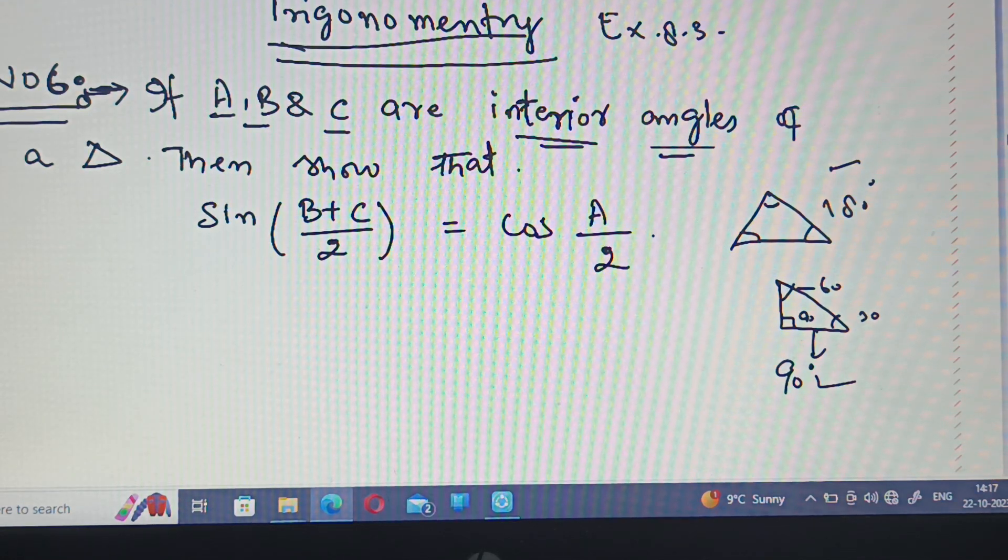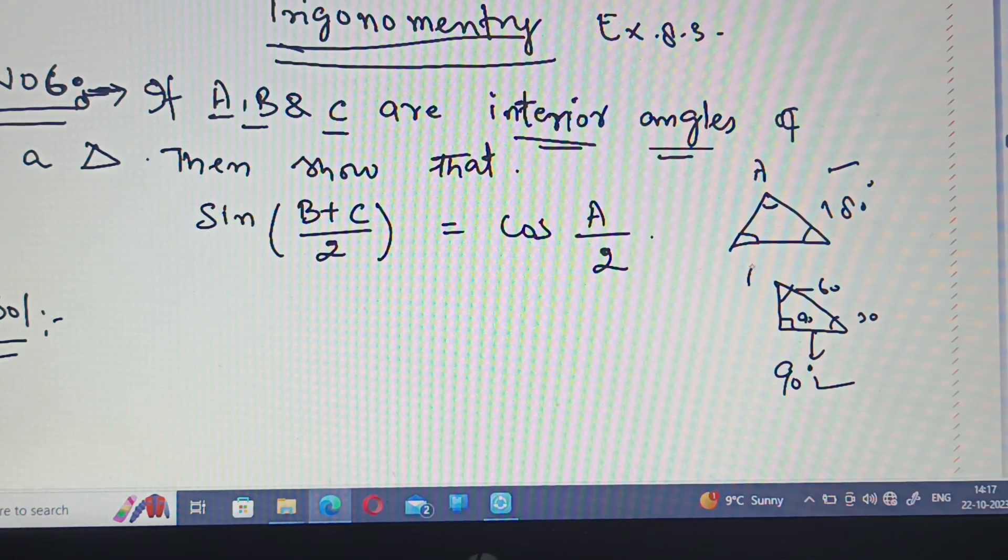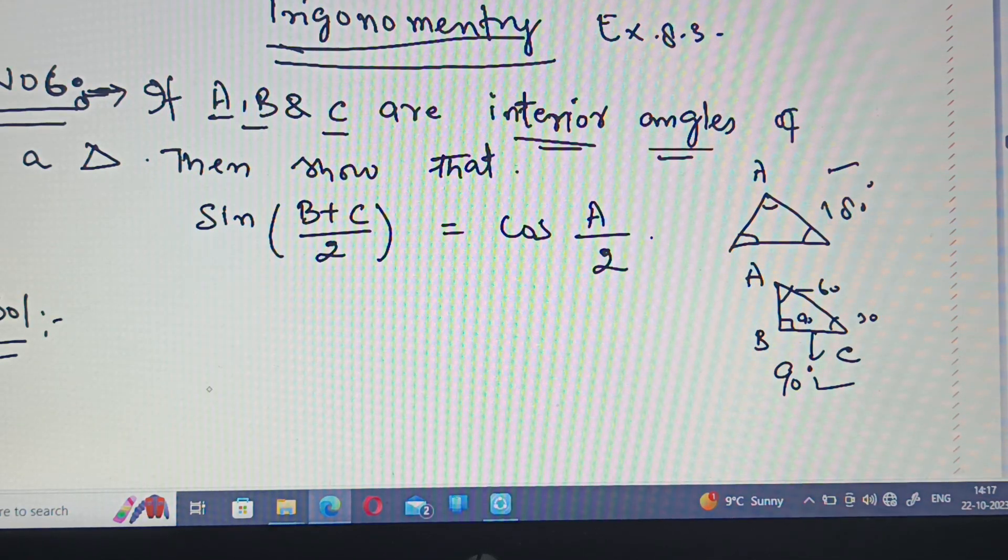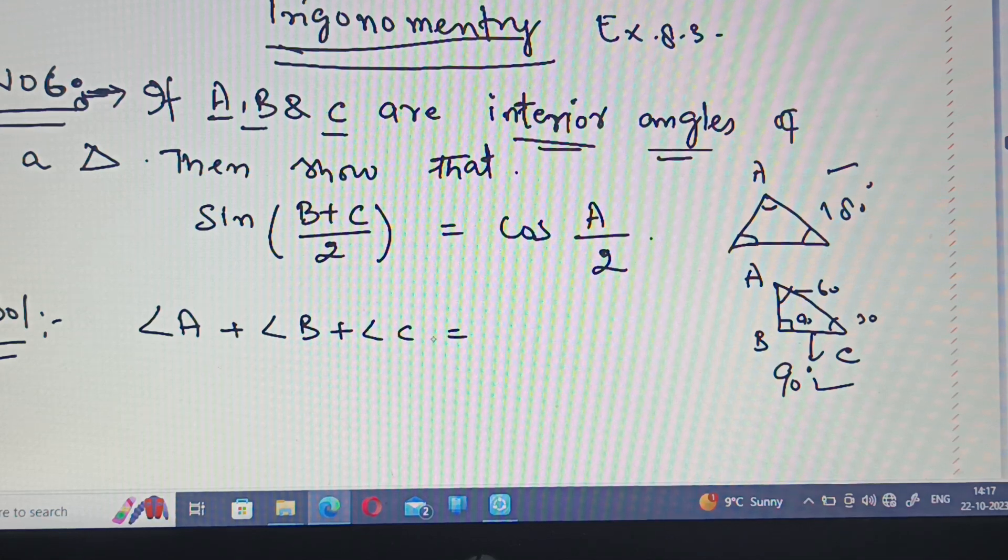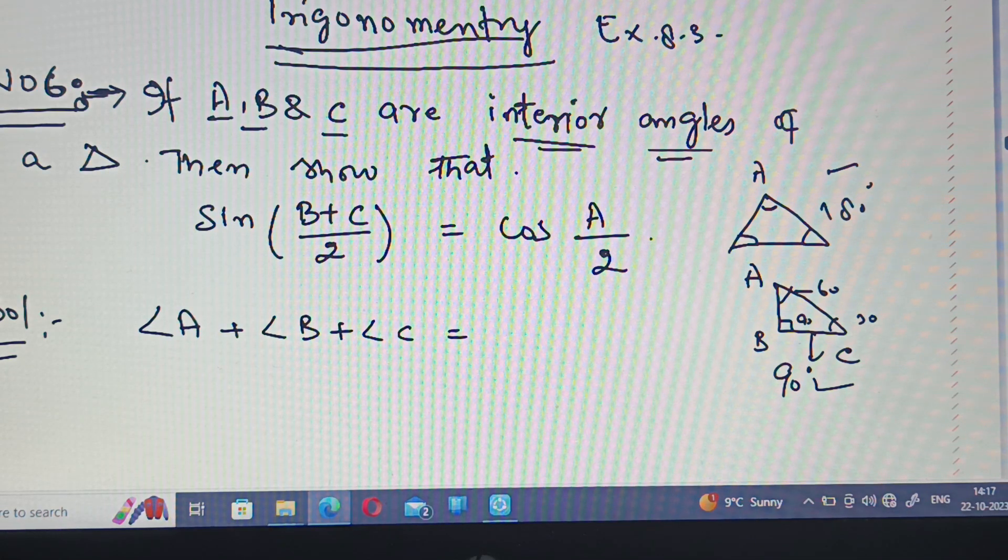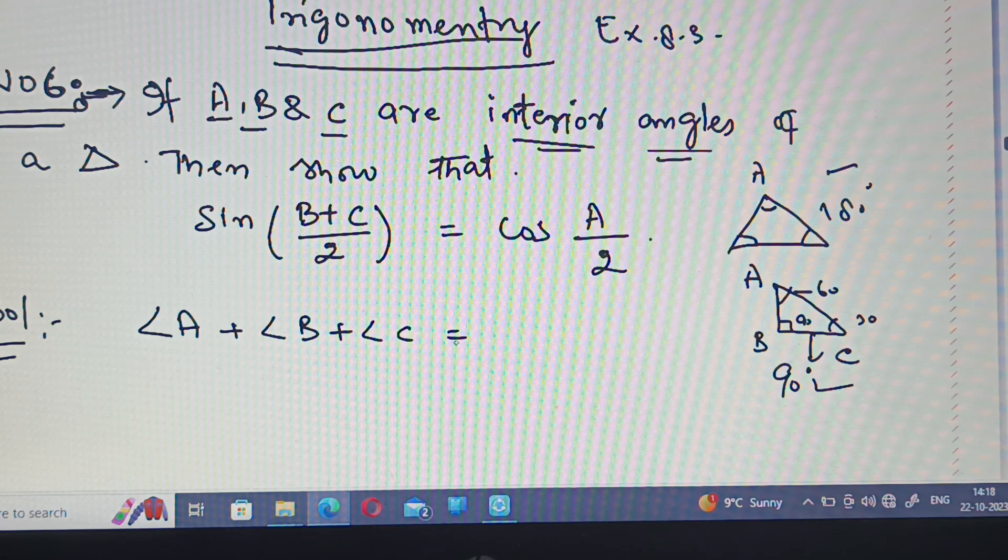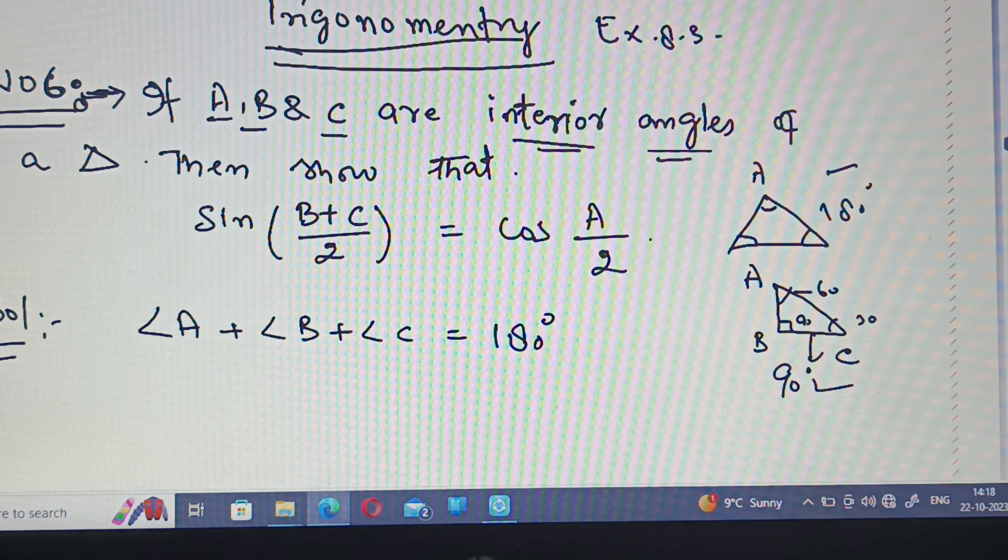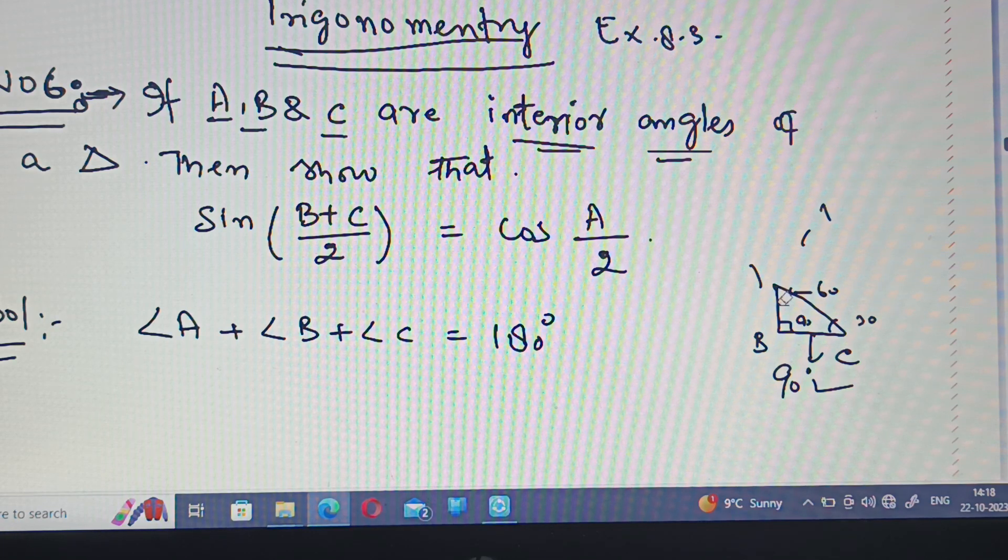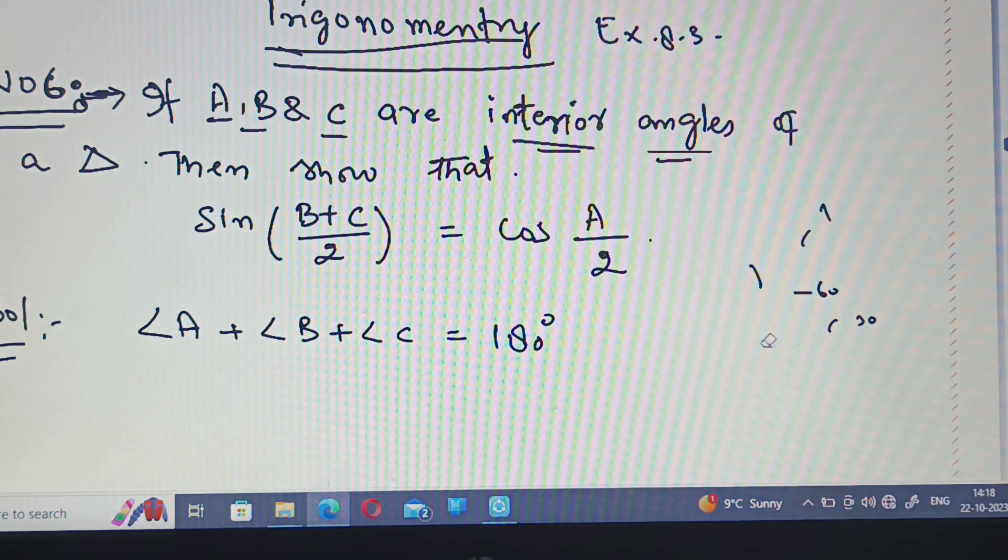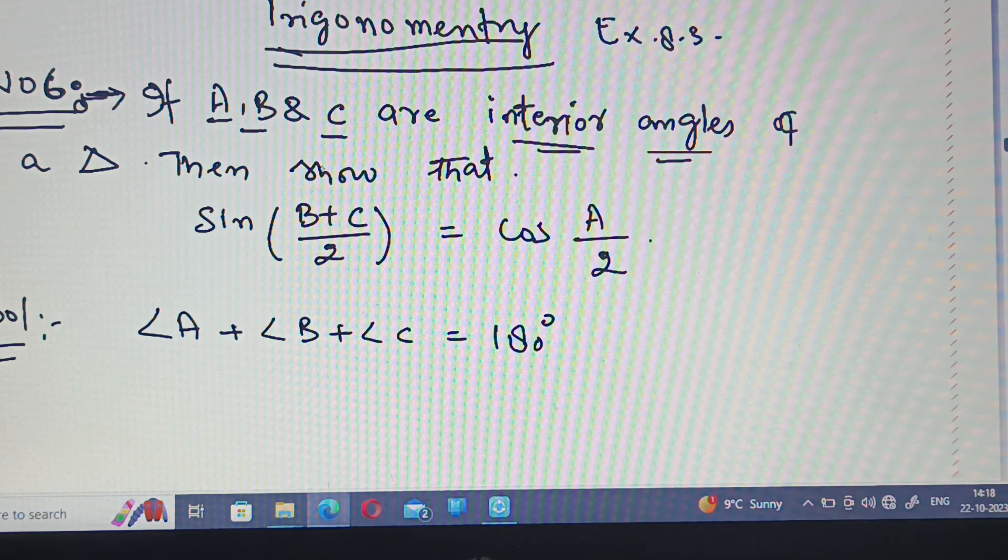For example, if we have angle A, angle B, and angle C, then angle A plus angle B plus angle C equals 180 degrees. This is the angle sum property of a triangle. Sum of all angles of a triangle is equal to 180 degrees.